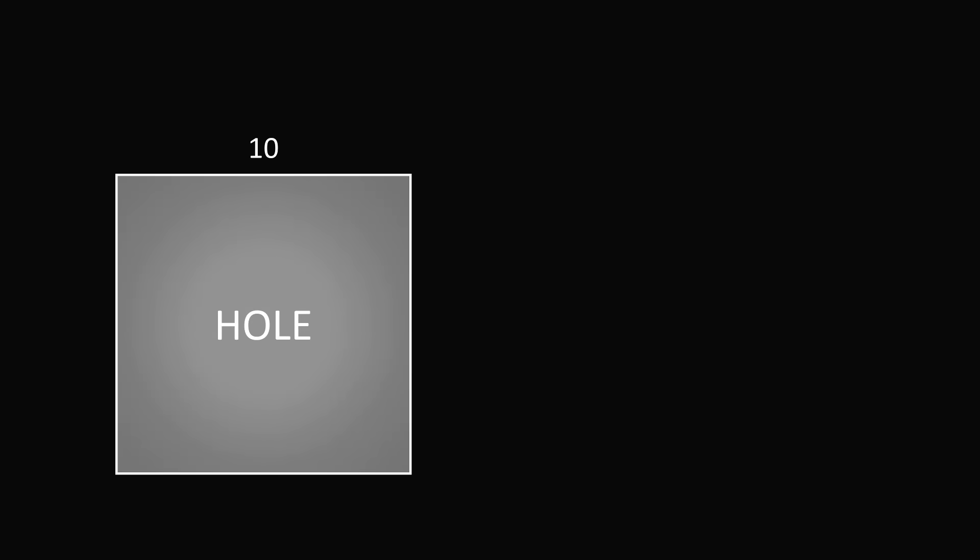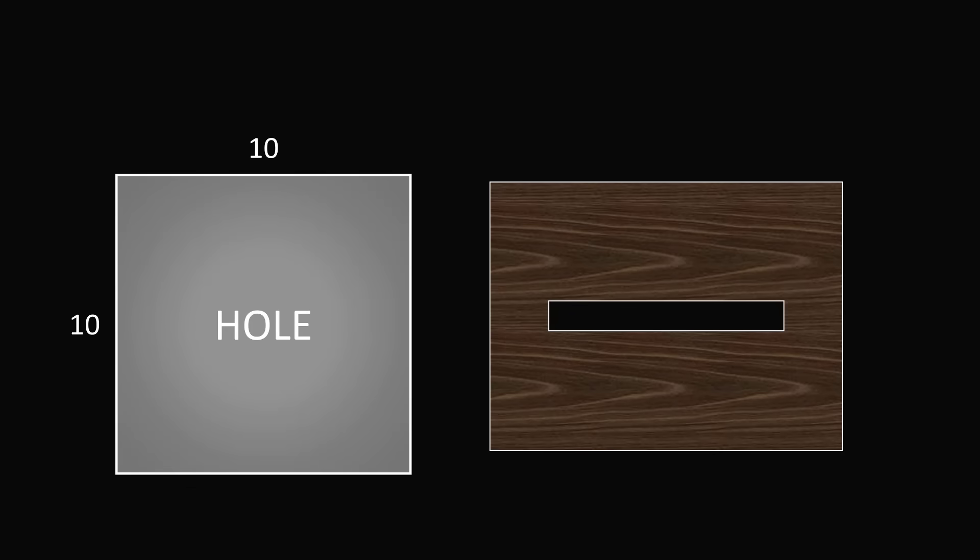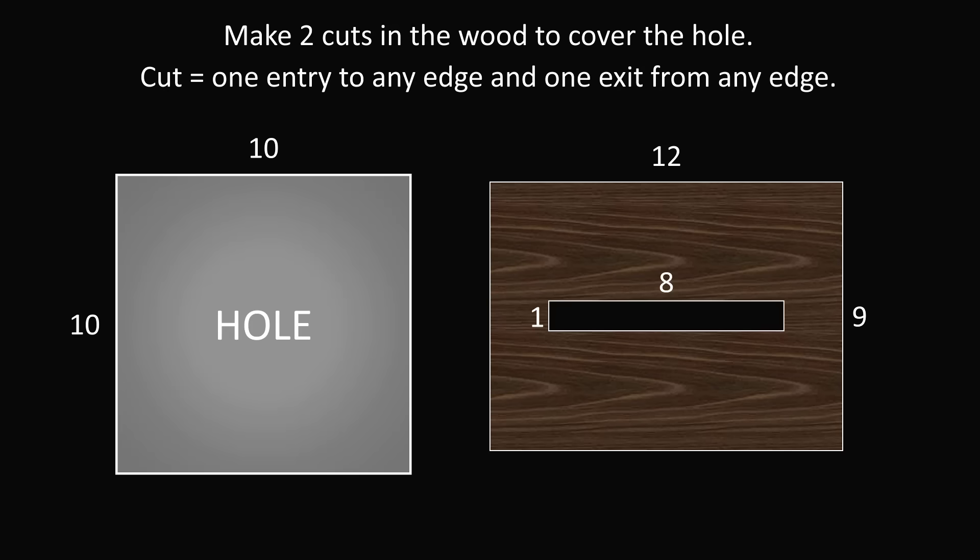Puzzle 1. There is a square hole that measures 10 by 10. You have a rectangular piece of wood, which has a rectangle cut out from its center. The rectangular piece of wood has dimensions of 12 by 9, and the missing part in the center is a rectangle with dimensions of 8 by 1. Here's your task: Make two cuts in the wood to cover the hole. A cut is defined as one entry to any edge and one exit from any edge. The cut can be any shape you like. I thank Tom for the suggestion, and I admit I wasn't able to solve this puzzle. Can you figure it out?